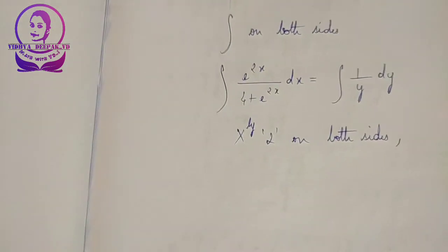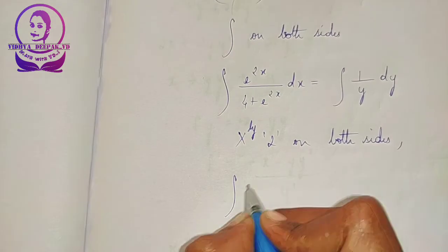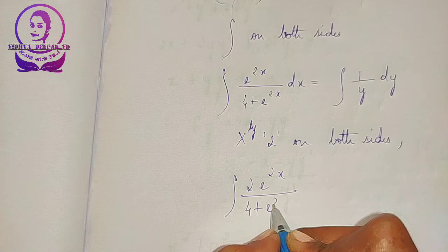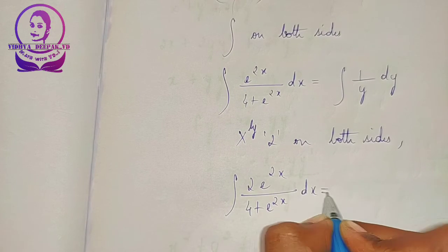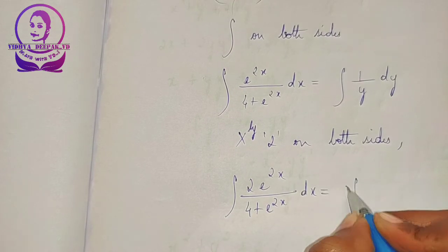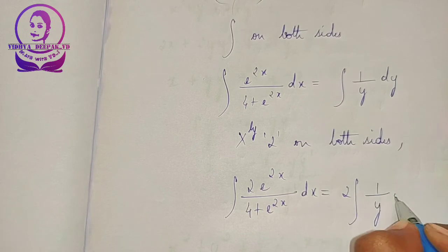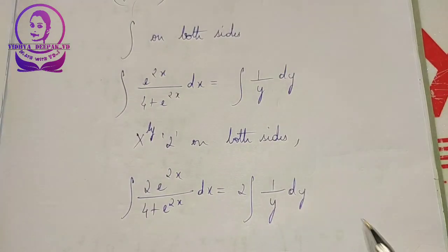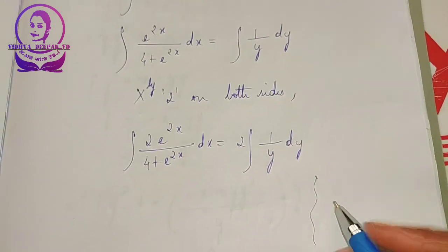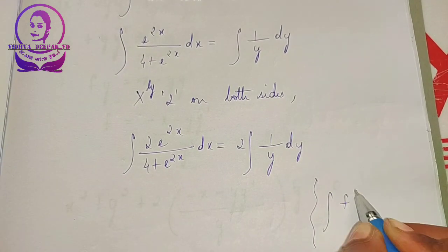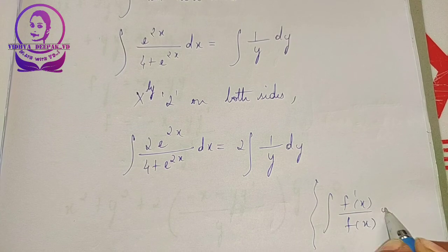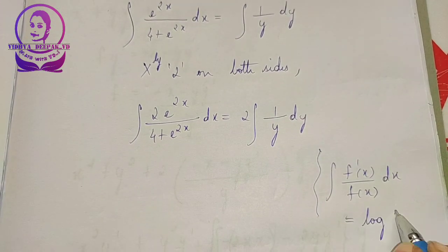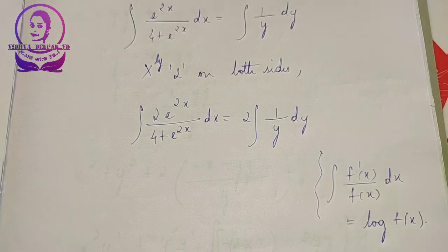Multiplying 2 on both sides, this becomes integral 2 into e to the power of 2x divided by 4 plus e to the power of 2x dx is equal to 2 times integral 1 by y dy. Integration of 1 by y is log y. The formula I am using here is integral of f dash of x divided by f of x dx is equal to log of f of x.